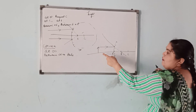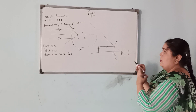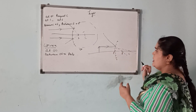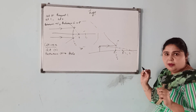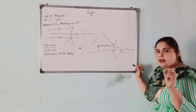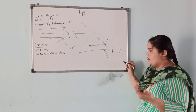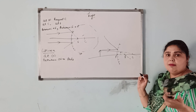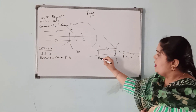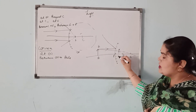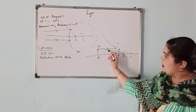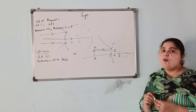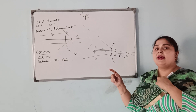Now we pass the second ray from the center of curvature. The dotted lines indicate that the rays do not actually pass through — they just appear to pass. Where the two rays appear to meet gives us the image position. The image formed is on the opposite side of the mirror. That is why this image is called virtual.